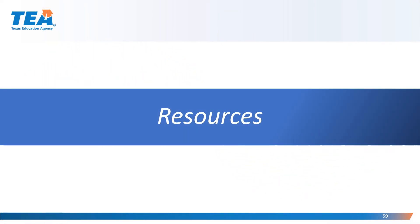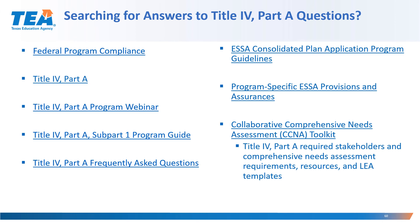I'd like to share just a few resources that are available to you. If you're searching for answers to Title IV Part A questions, we have several documents and areas in which you may receive answers. The first is the Federal Program Compliance Division's Title IV Part A program webpage. There is a program webinar regarding Title IV Part A requirements posted on our webpage, as well as the Program Guide and the Frequently Asked Questions. Our ESA Consolidated Plan Application Program Guidelines, Program-specific ESA Provisions and Assurances, and the Collaborative Comprehensive Needs Assessment Toolkit are all available, and all of these are clickable links within your PowerPoint.